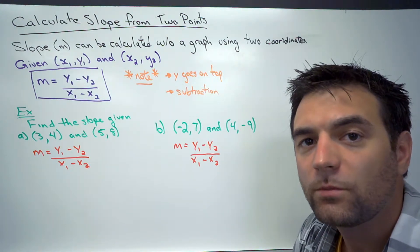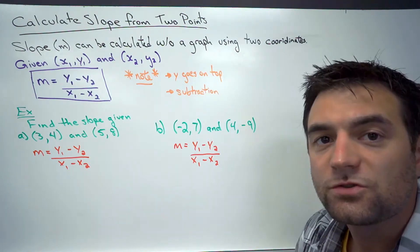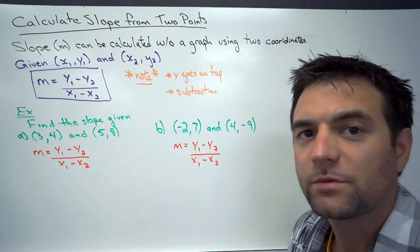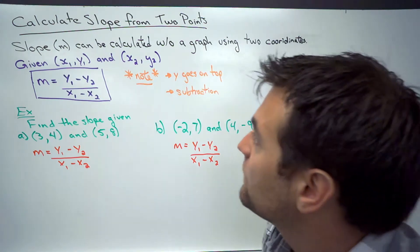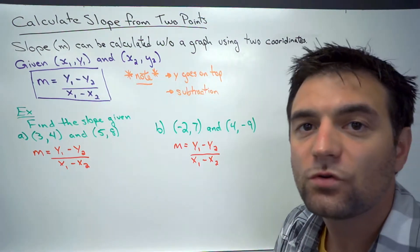We're looking at how to calculate slope from two points. So the slope, again we use the letter M to represent slope, can be calculated without a graph using two coordinates.